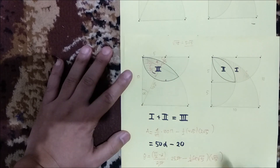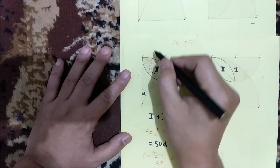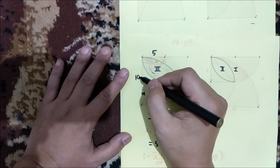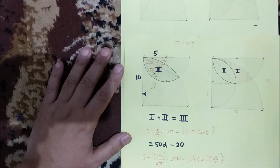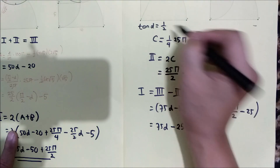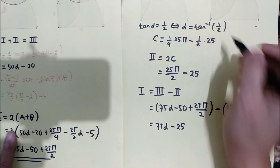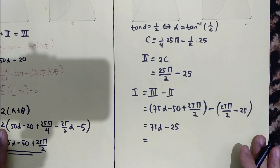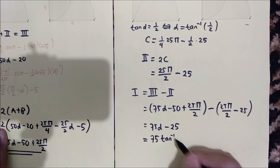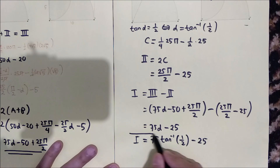Do we know the value of alpha? Yes — notice that in the right triangle, the side opposite alpha is 5 and the adjacent side is 10, so tan(α) = 5/10 = 1/2. Therefore α = arctan(1/2). The final answer is 75·arctan(1/2) − 25.